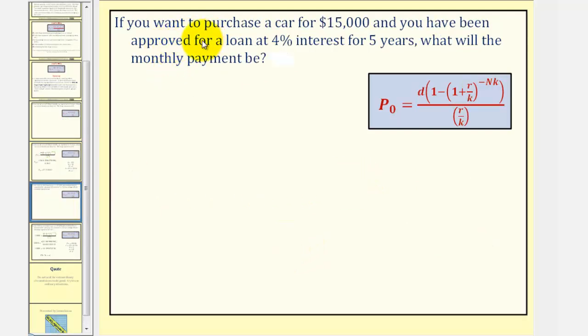In this example, you want to purchase a car for $15,000, and you have been approved for a loan at four percent interest for five years. What will the monthly payment be? Again, let's start by determining the given information. The loan amount would be $15,000, and therefore, P₀ equals 15,000. The loan is at four percent, so R would be four percent expressed as a decimal. That would be 0.04. The loan is for five years, so N is equal to five. And the payments are going to be monthly, so K would be 12.